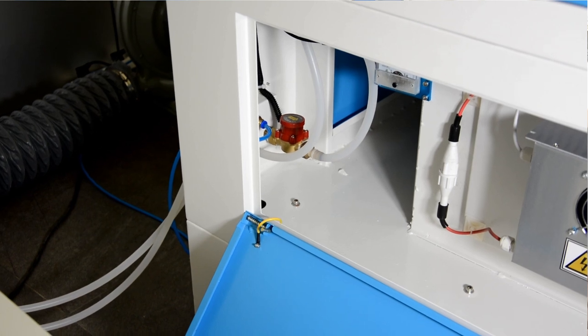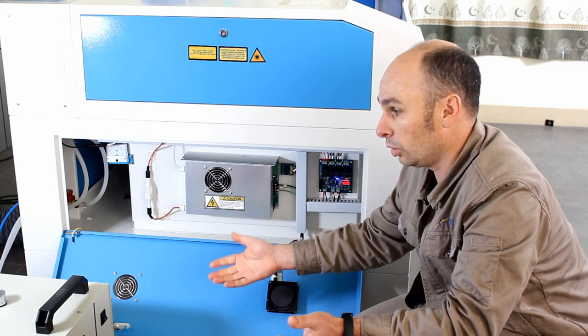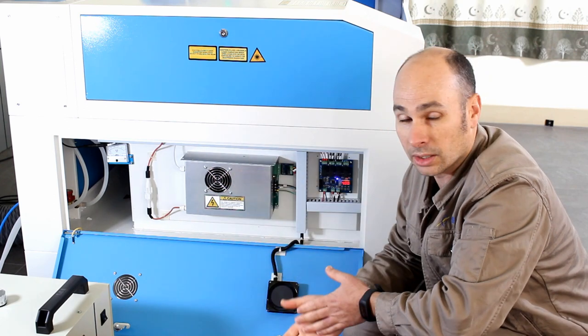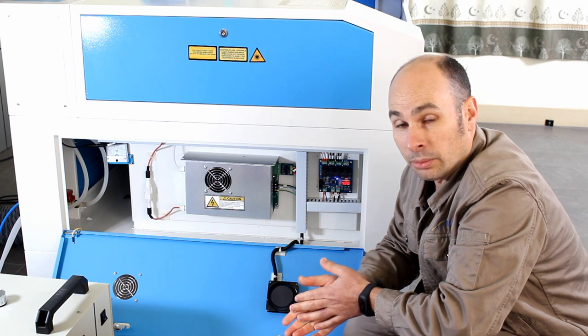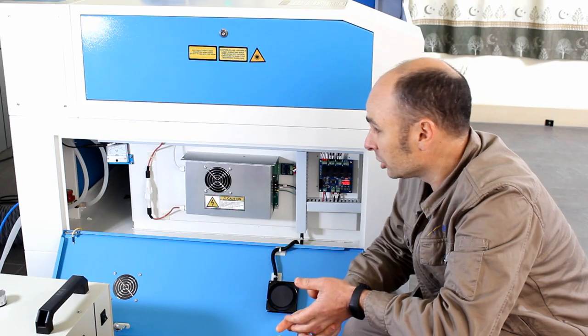And for any reason if your water chiller was perhaps to be left or switched off or for some reason it got a blockage or it didn't work or perhaps your tubes or something that's sitting on it, it would not allow your laser to run. You would get a water protection error on your control. This is a really important function.